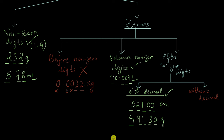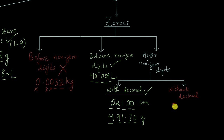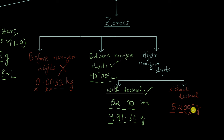The only remaining case is when zeros come after non-zero digits but there is no decimal in the number. For example, 52,000 grams has only two significant figures — 5 and 2. The other zeros are not significant because there is no decimal. Similarly, 350 grams has only two significant digits; the last zero is not significant because there is no decimal.